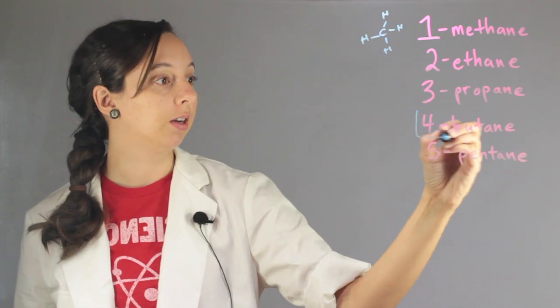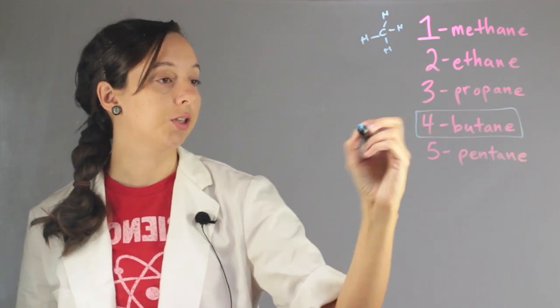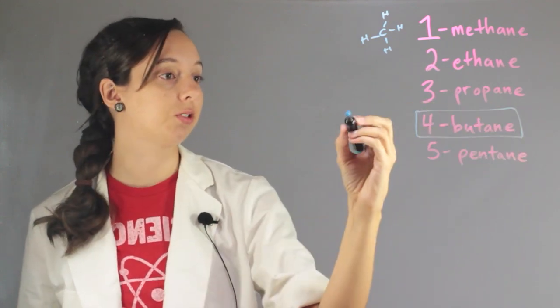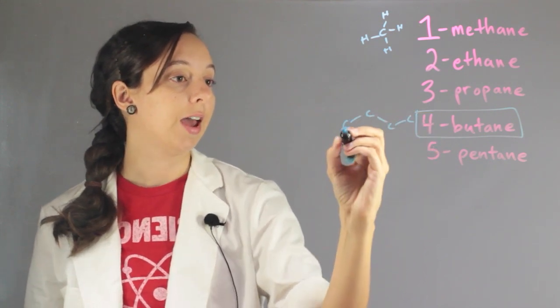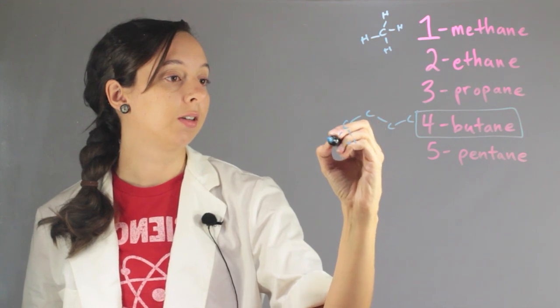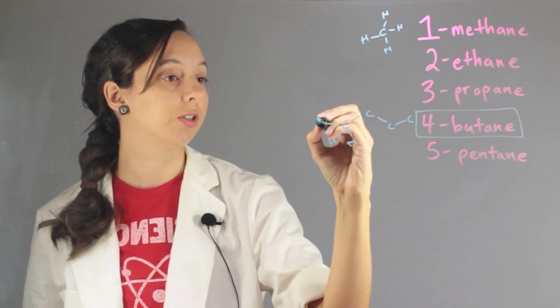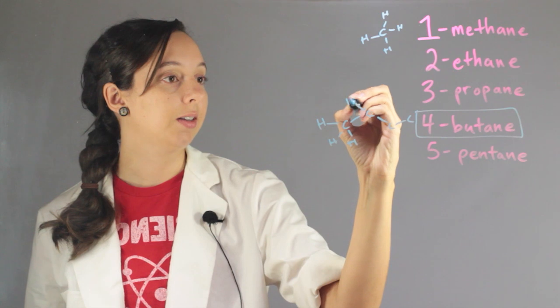And what we're talking about, butane, has four carbons. So by the time you get here, its structure has four connected carbons in a straight line. And then each carbon is going to have the appropriate number of hydrogens. So the ones on the end have three,